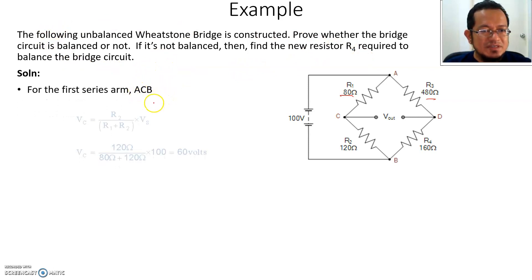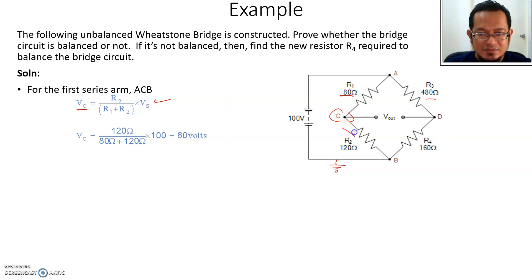For the first series arm ACB, remember the derivation we discussed before. You can use this approach. If we calculate the voltage VC at this point using voltage divider, VC basically is VC to ground. This is VCB. It's R2 divided by R2 plus R1 multiplied by VS. We plug in the numbers and get VCB is 60 volt.